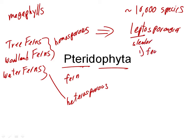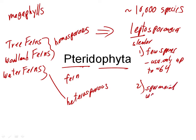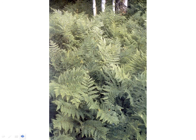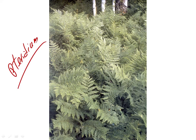The leptosporangia have few spores — usually only up to about 64 — and a sporangial wall consisting of a single cell layer. So they are really small sporangia. This is the genus Pteridium, one of the woodland ferns, and we'll start there next time.